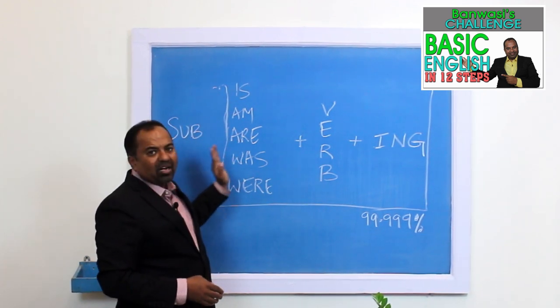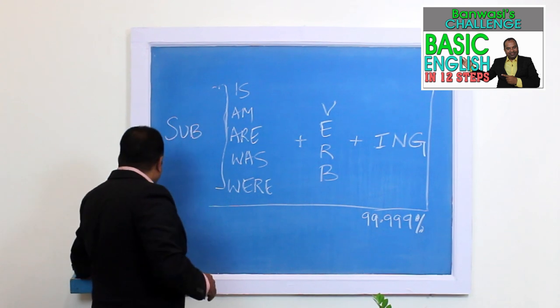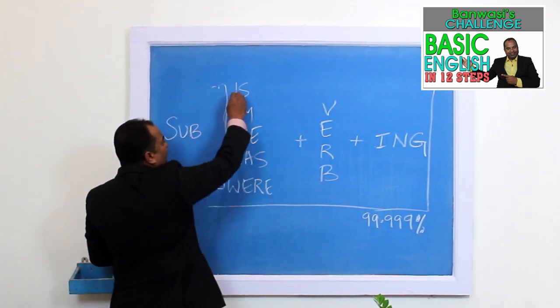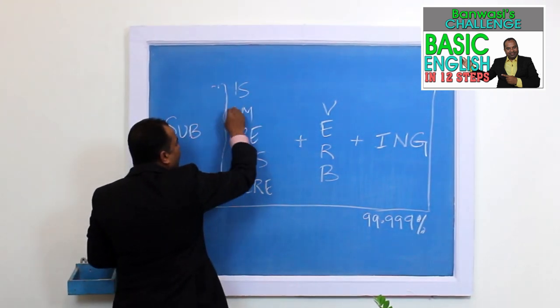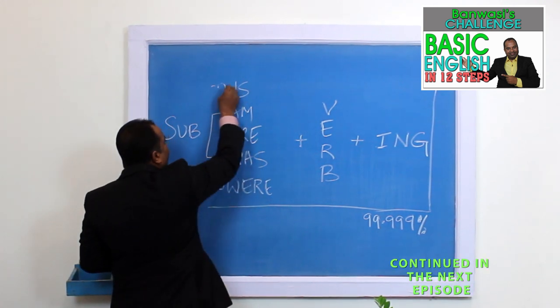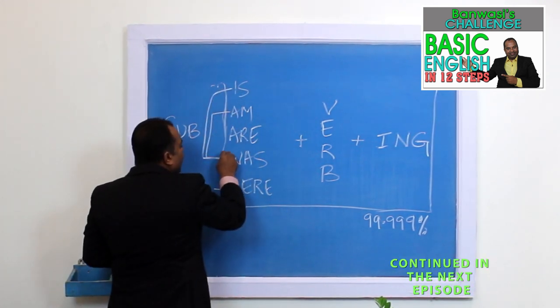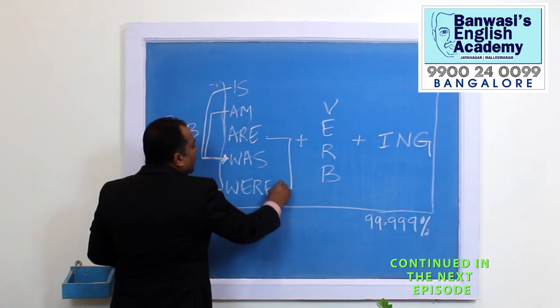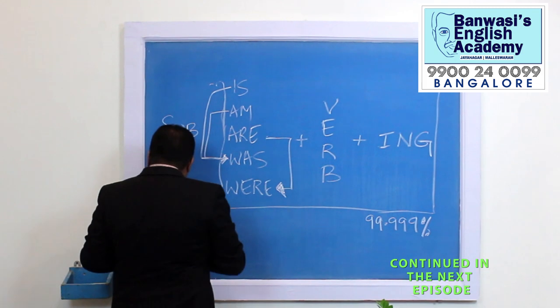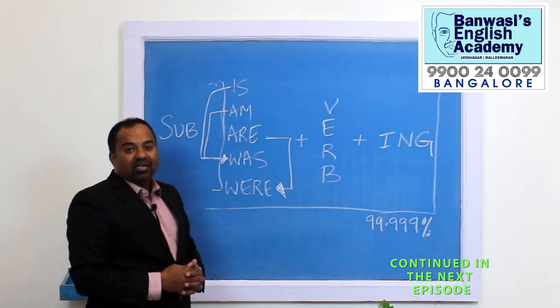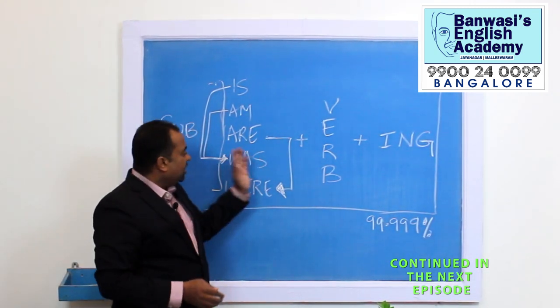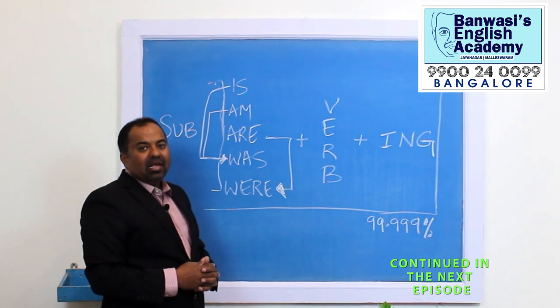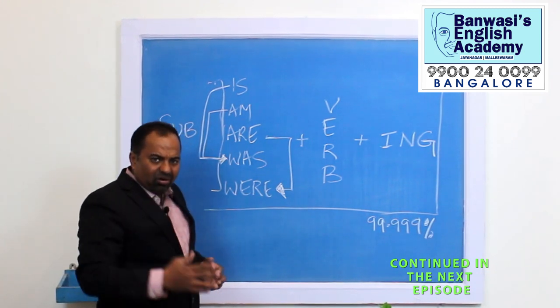If you understand this rule properly, you'll be able to use it. The helping verbs are: AM, IS, WAS, WERE.